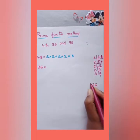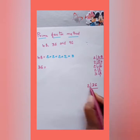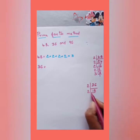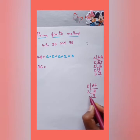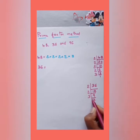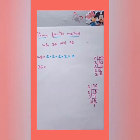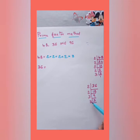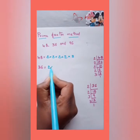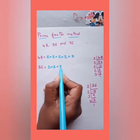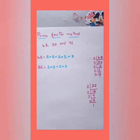For 36: divide by 2 — 36 ÷ 2 = 18, 18 ÷ 2 = 9. Since 9 cannot be divided by 2, move to the next prime, 3: 9 ÷ 3 = 3, 3 ÷ 3 = 1. So the prime factors of 36 are 2 × 2 × 3 × 3.